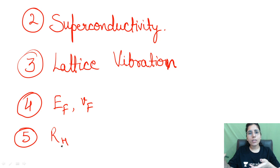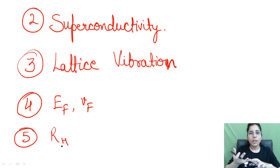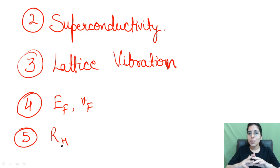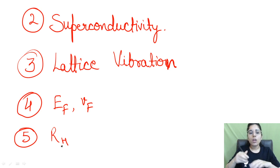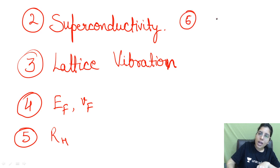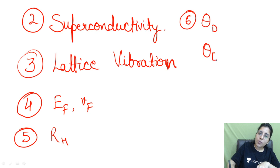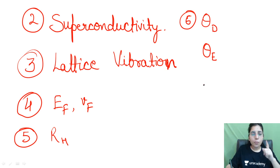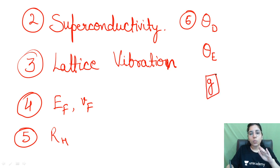Questions can also be based on the type of doping — intrinsic case, extrinsic case, and related formulae. After that, consider the Debye temperature, Einstein's temperature, and general formulae. One question from density of states is also very important and expected. These cover the major portions you should target.